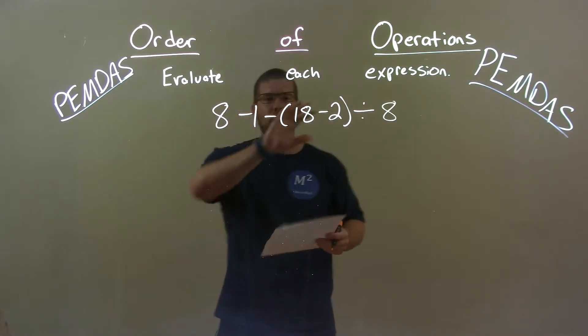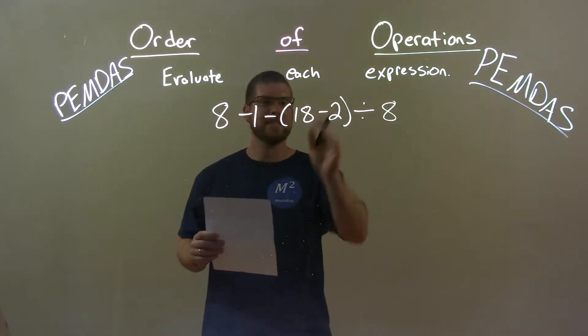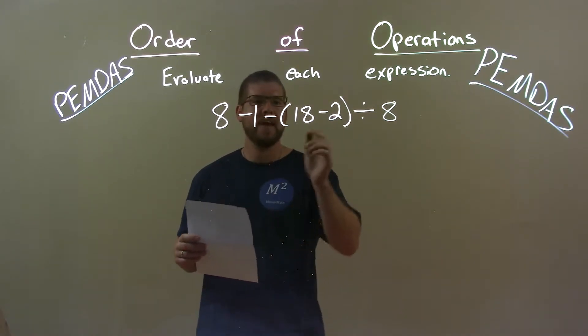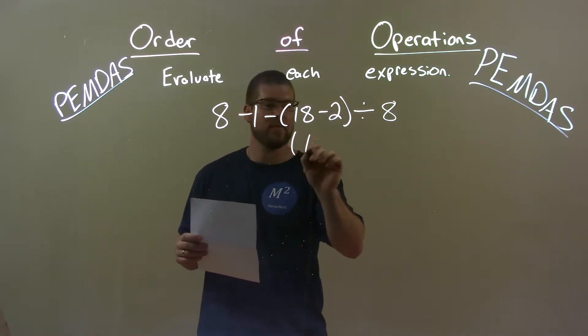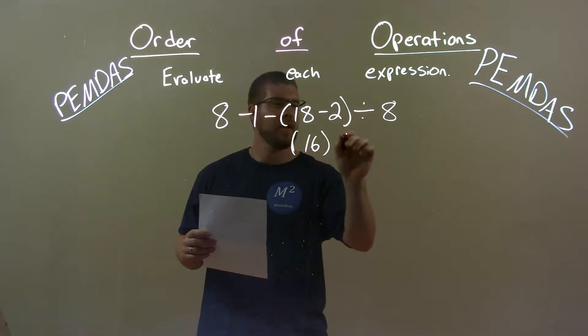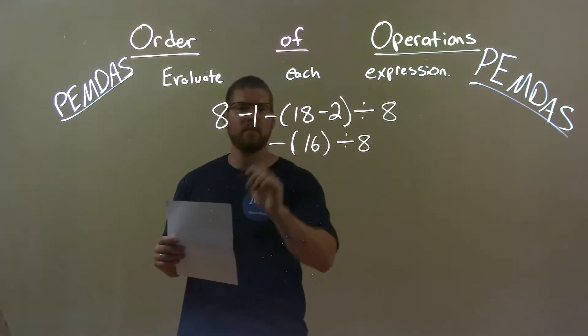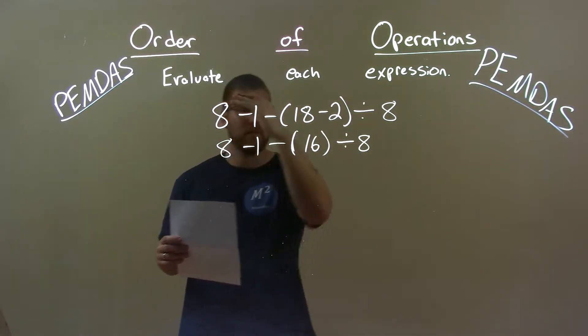All right, parentheses first. 18 minus 2 is in our parentheses, and that comes out to be 16. So we got 16 here, okay, divided by 8, and then subtraction, 1, subtraction, 8. Bring the rest down.